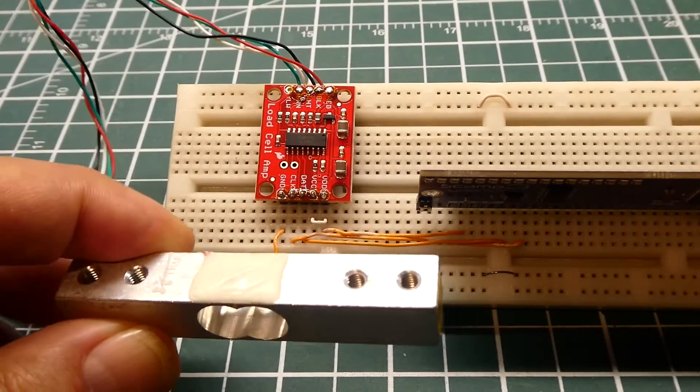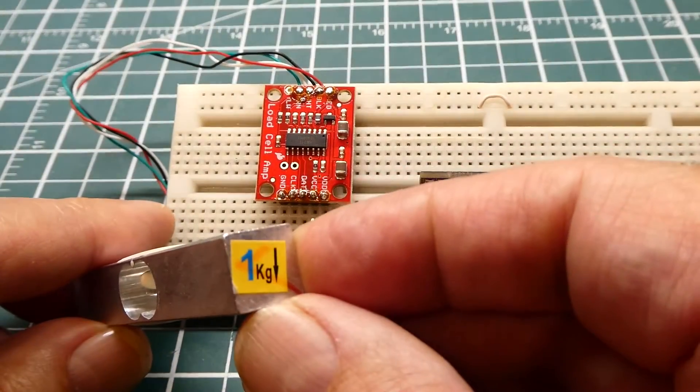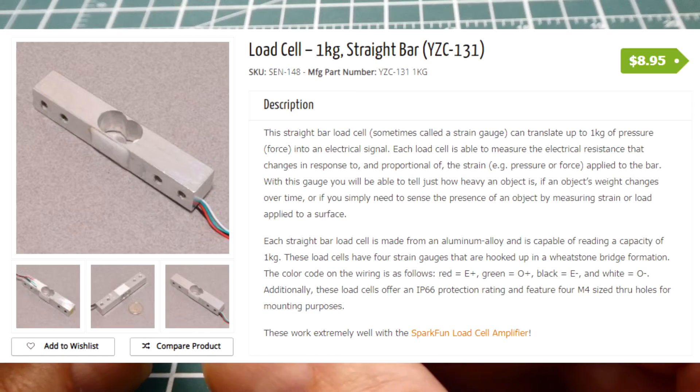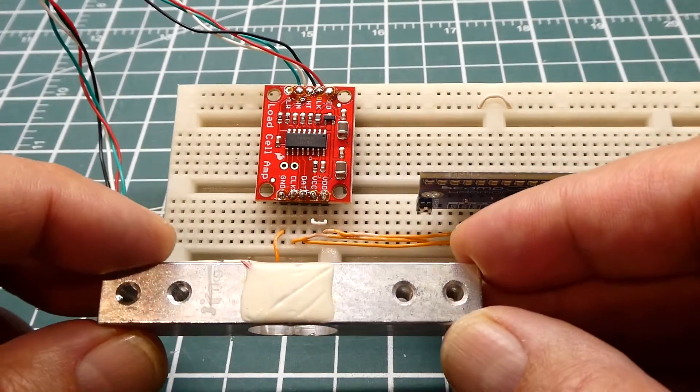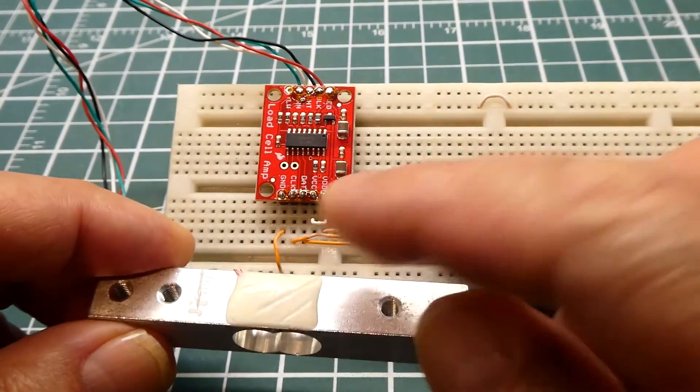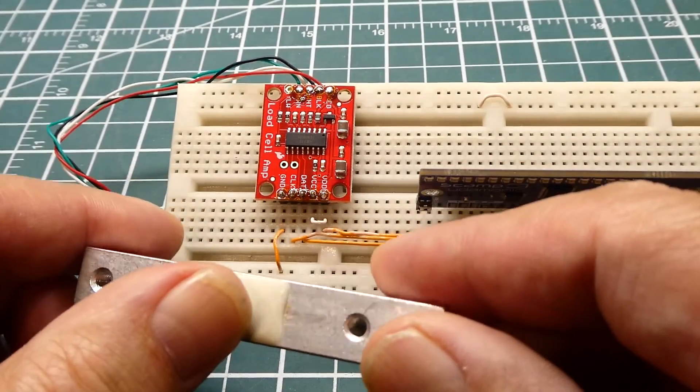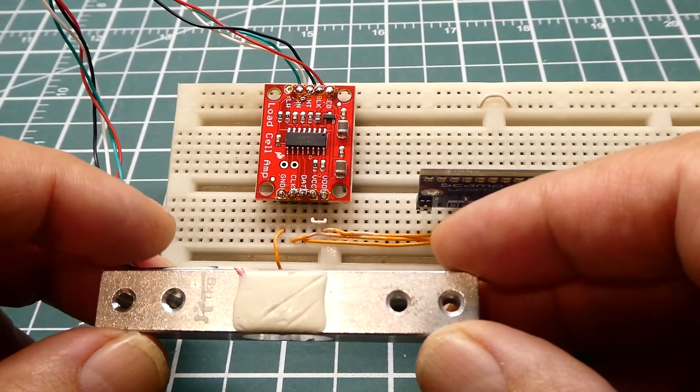So this is my load cell. It's a one kilogram load cell, so that's a thousand grams or about 2.2 pounds. Now there's four strain gauges on this load cell, there's two on the top and two on the bottom, and they're configured as a Wheatstone bridge.